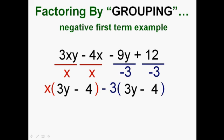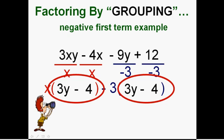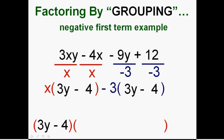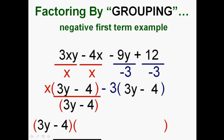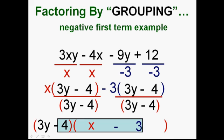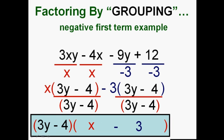And dividing 12 by negative 3 I get minus 4. And a good thing I divided by a negative, isn't it, because that switched the signs of everything and now I have a common term, a common polynomial term if you would, and I can factor that out. Dividing the red group by 3y minus 4 I simply get x, and dividing the blue group by 3y minus 4 I get a negative 3 or a minus 3. And son of a gun, I've got it.